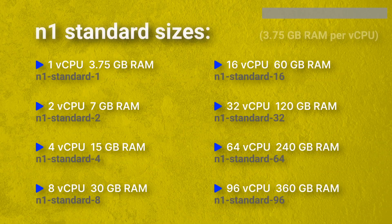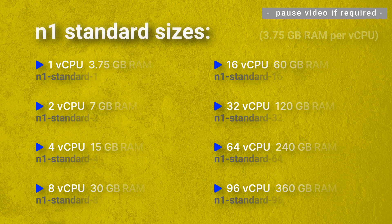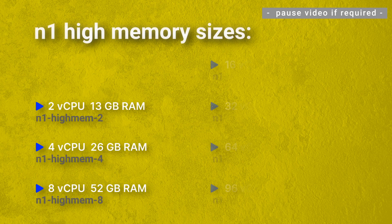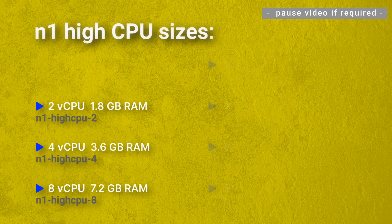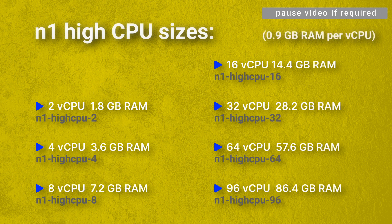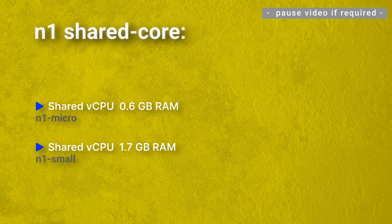N1 standard sizes include 3.75GB of RAM per vCPU. N1 high memory sizes include 7.5GB of RAM per vCPU. N1 high CPU sizes include 0.9GB of RAM per vCPU. N1 shared core options are available in the N1 micro with 0.6GB of RAM and the N1 small with 1.7GB of RAM.